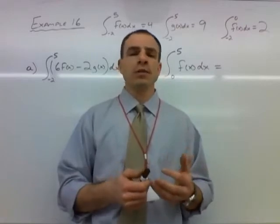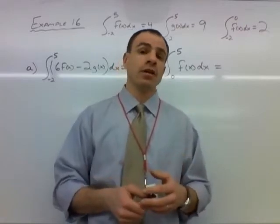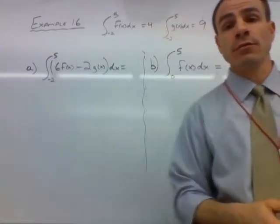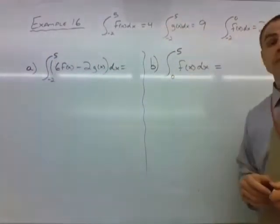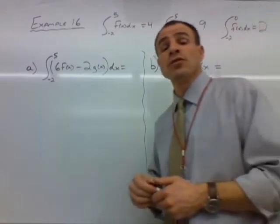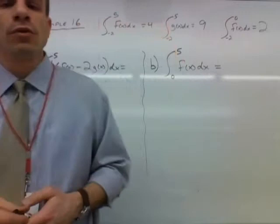So for problem number 16 we're given three pieces of data about the functions f and g. We don't know anything particular about the formulas for f and g, but we are given that the integral from negative 2 to 5 of f(x)dx equals 4, the integral from negative 2 to 5 of g(x) equals 9, and the integral from negative 2 to 0 of f(x) equals 2.